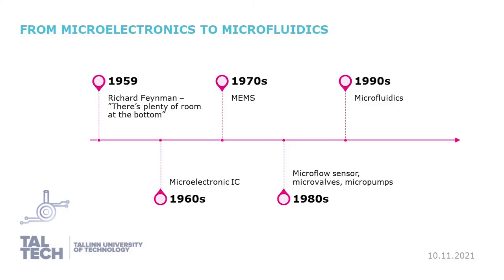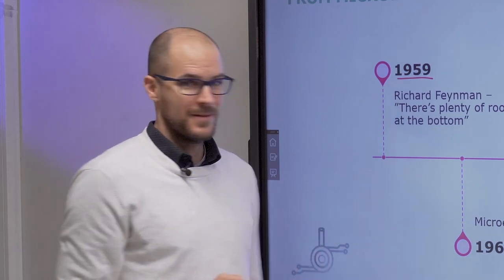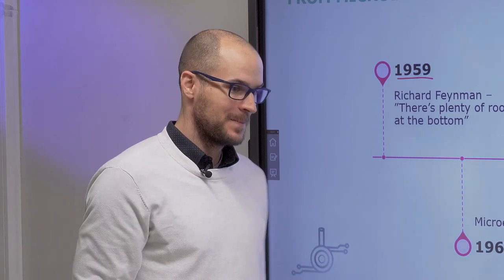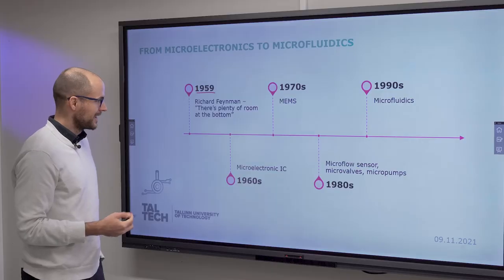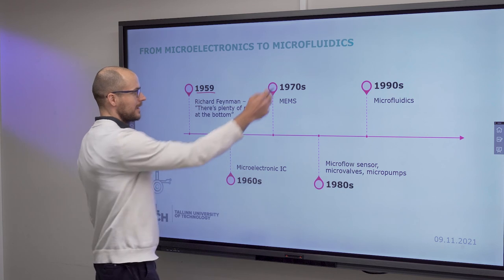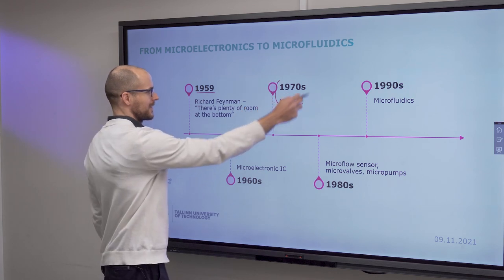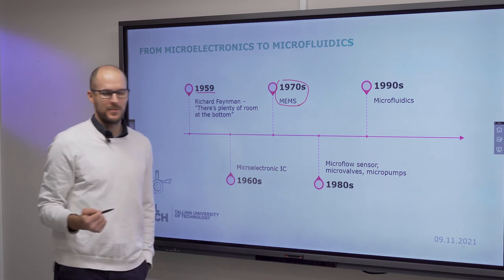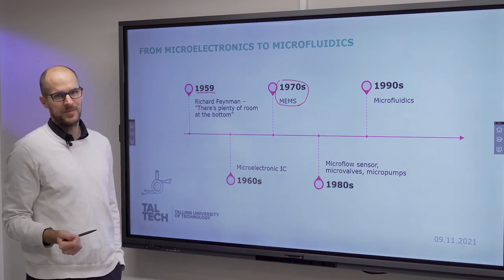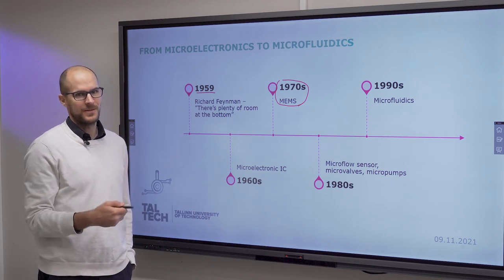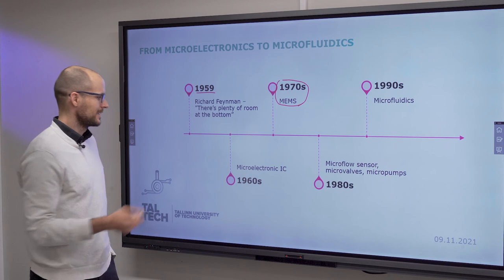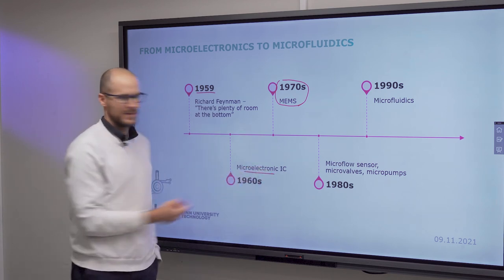Here is a historical overview of the origins of BiOMEMS and microfluidics. It all began a really long time ago with the revolution of miniaturization of microelectronics. The turning point was in the 70s when the first microelectromechanical devices appeared, fabricated with the same microfabrication technologies that were used to make integrated circuits.